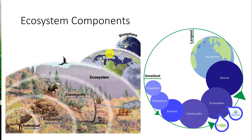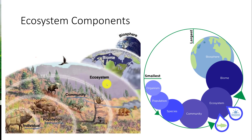For example, we would have a tundra biome at the very top of the Earth, subarctic in blue, and then other biomes represented on the slide. The next level below biome is an ecosystem, which is generally considered to be a collection of organisms within a specific part of a biome.